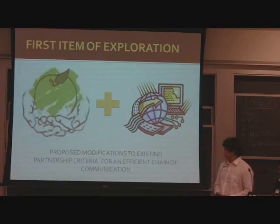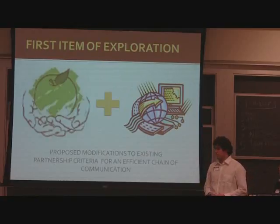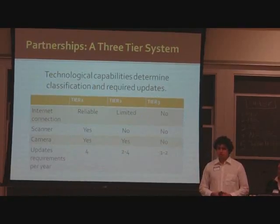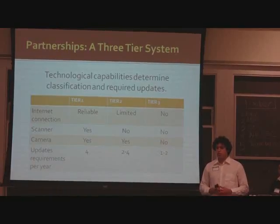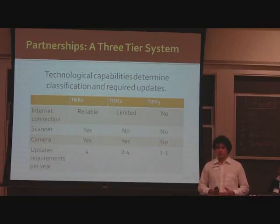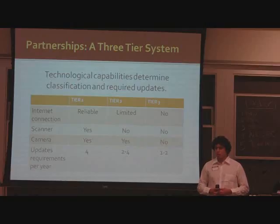The first thing in the exploration is the current partnership criteria that Evole uses. We believe that the current partnership criteria is too focused on achieving a standard, and not really considering that NGOs have limitations, and that it should be a more specific phase. We propose that Evole approaches the NGOs in a different way, by dividing them into three tiers.